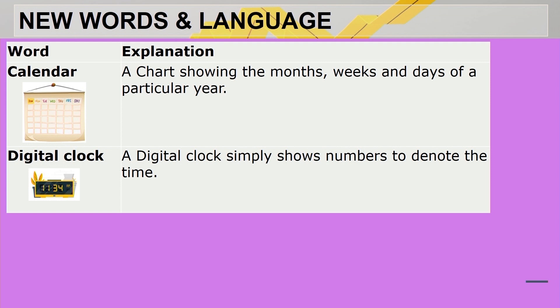Then a calendar. A calendar is a chart showing the months, weeks and days of a particular year. Your digital clock. A digital clock simply shows the numbers to denote the time. And now it is time for an ad break.